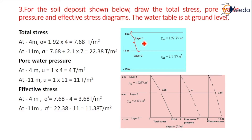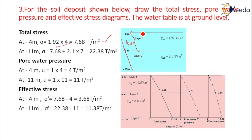Sigma equals layer 1 gamma sat of 1.92 multiplied by Z. Z is 0 to 4, that is 4 meters. So total stress = 1.92 × 4 = 7.68 ton per meter square. At the 11 meter level, total pressure = 7.68 + 2.1 × 7 = 22.38 ton per meter square.